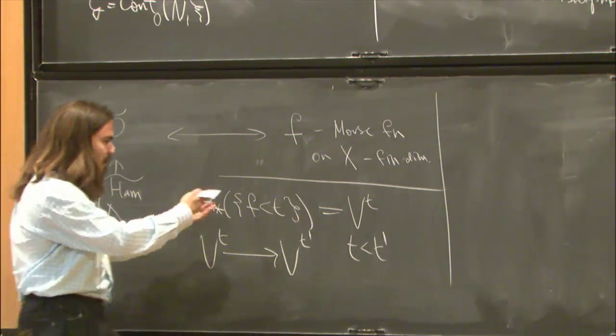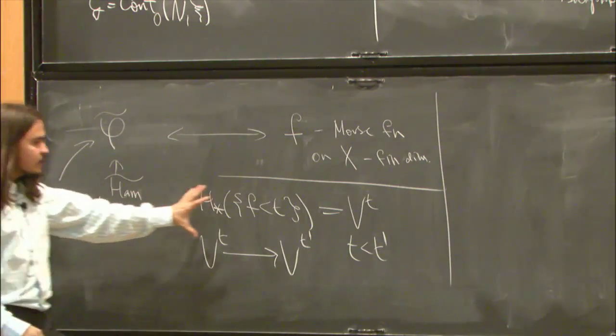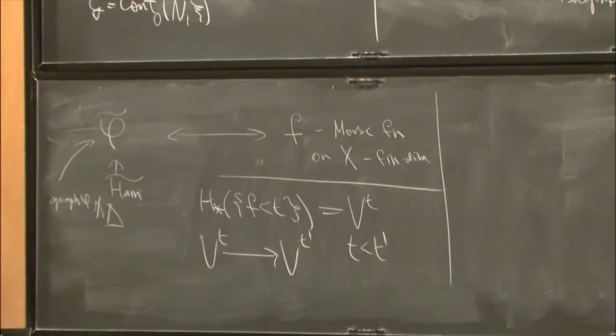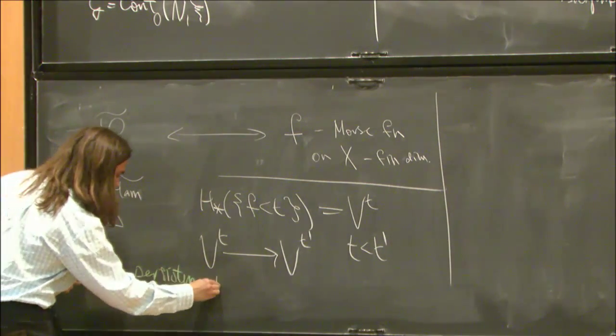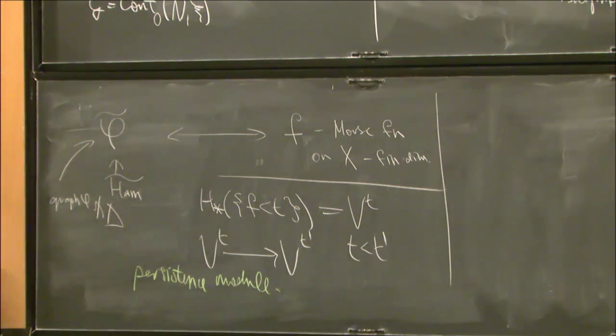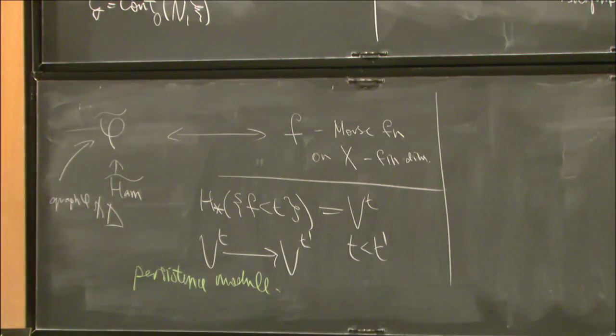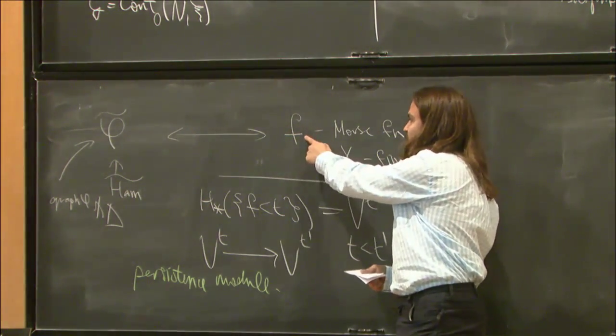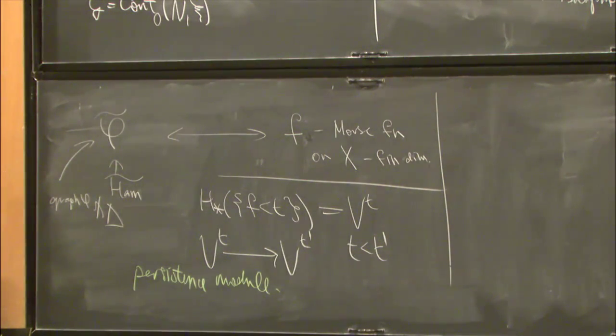All these maps commute functorially. This kind of system is called the persistence module. One can extract all kinds of numerical invariants from these persistence modules that are stable under small C0 deformations in F. Under this metaphor, C0 deformations of the function correspond to Hofer small deformations of the diffeomorphism.